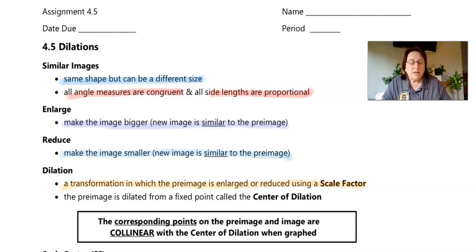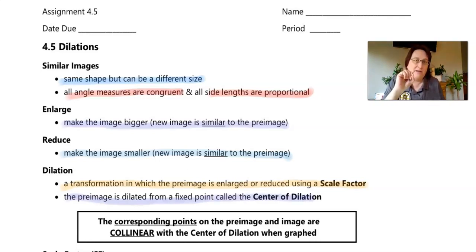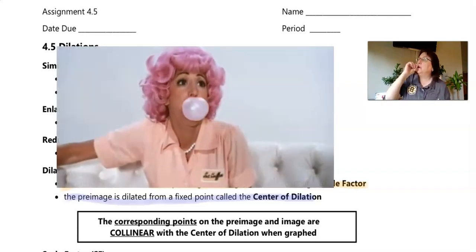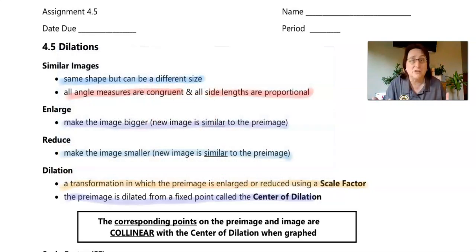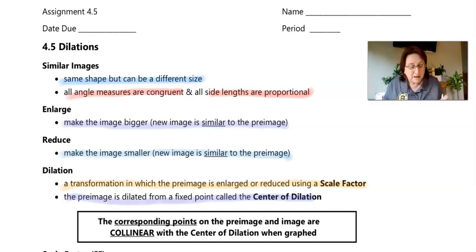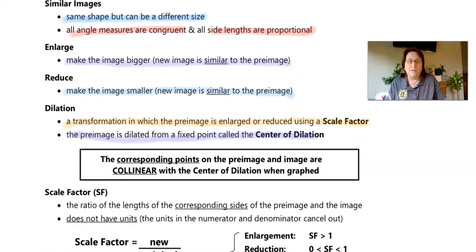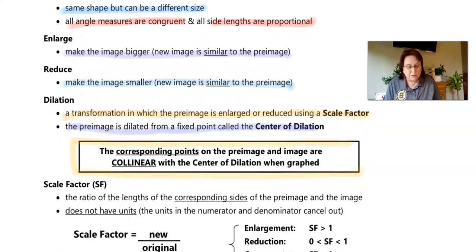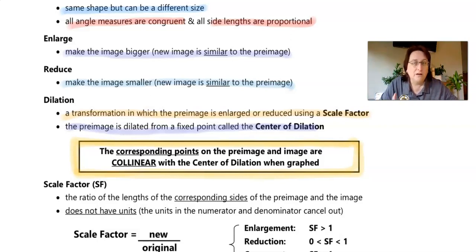We dilate an image from a fixed point called the center of dilation. It's like blowing a bubble with bubble gum - your mouth is the center of dilation, that's where you start from. Now, an important note: the corresponding points on the pre-image and the image will be collinear with the center of dilation when they're on a graph. What does collinear mean? They'll all be on the same line.